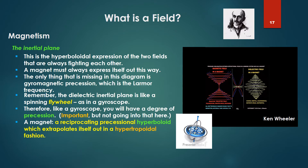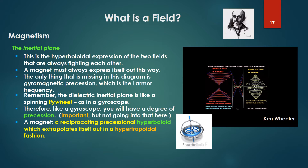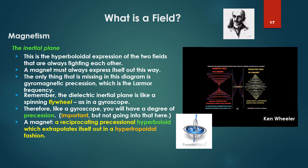A magnet, to describe it, is a reciprocating precessional hyperboloid which extrapolates itself out in a hypertrophoidal fashion.